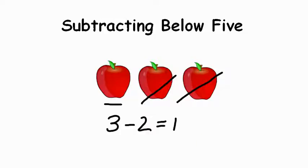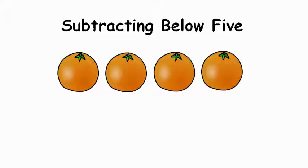Now let's take a look at another one. Here we have 4 oranges: 1, 2, 3, 4. And we're going to take away 1 orange. So we have 4 of them, and we're going to remove 1. 1 is gone. How many do we have left?